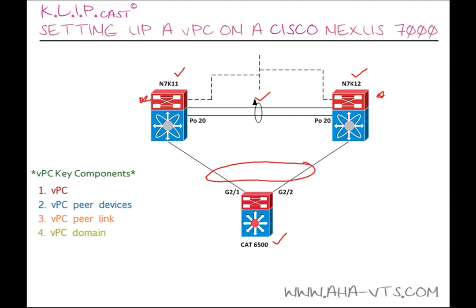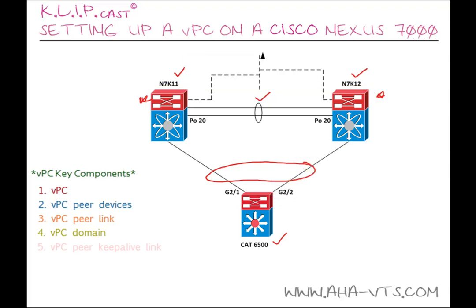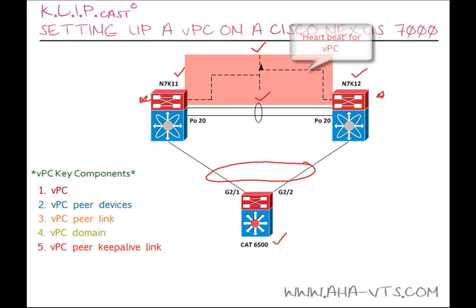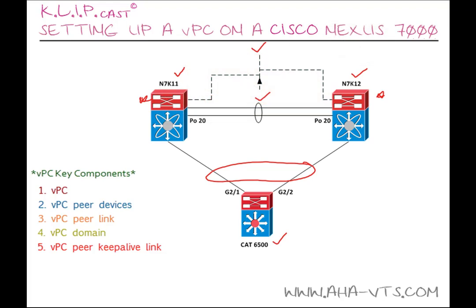Next we have the VPC domain, which is formed by the two VPC paired devices, and only one VPC domain can exist per VDC. Then we have the VPC peer keepalive link — a layer 3 link between the VPC paired devices used to ensure that both devices are up. In other words, it's the heartbeat between those VPC pairs. This fault-tolerant link sends configurable periodic keepalive messages on an out-of-band link. The management interface on the Nexus 7000s can be used for this purpose, but usually a separate layer 3 link in a VRF is preferred. Finally, we have the VPC member ports — the ports on the Nexus chassis that participate in the VPCs themselves.